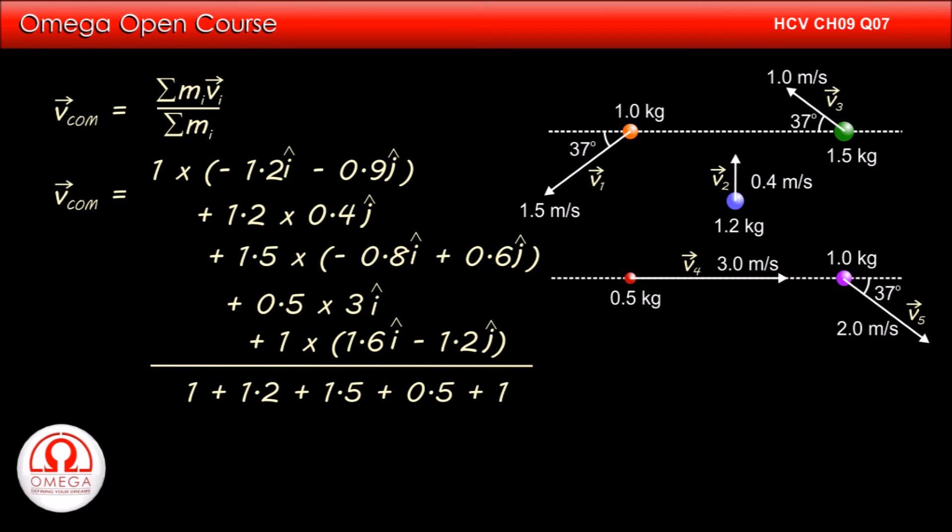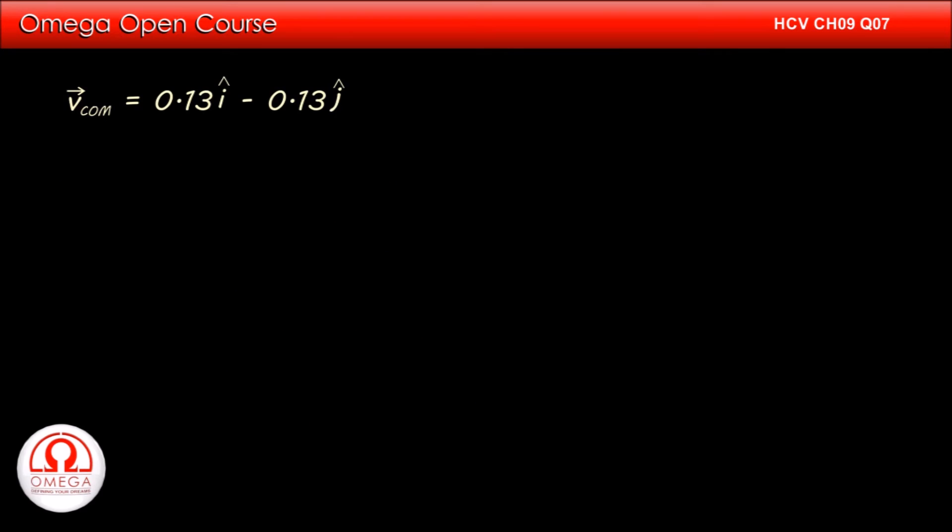Simplifying, we get velocity of center of mass approximately equal to 0.13 i cap minus 0.13 j cap. The magnitude of the velocity of the center of mass is root under 0.13 square plus 0.13 square, which is approximately equal to 0.2 meters per second.